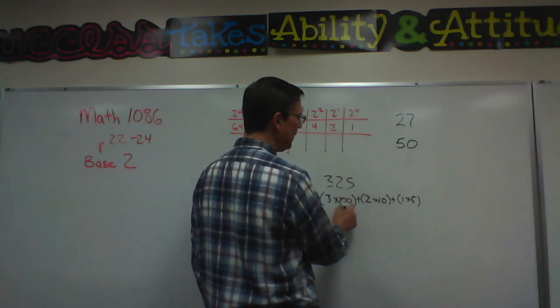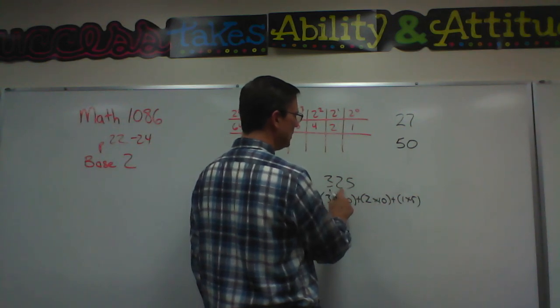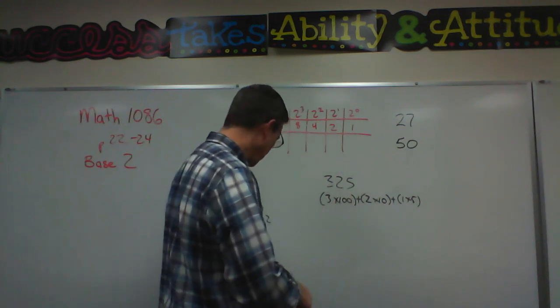So you're taking the place value times the digit that's in that place, and then if you added them all up, you would have the number. All right, let me erase that.